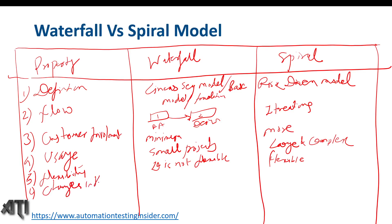The sixth property is changes in the requirement. In the waterfall model, changes are not possible once a phase is completed. In the spiral model, changes are possible due to its iterative nature.